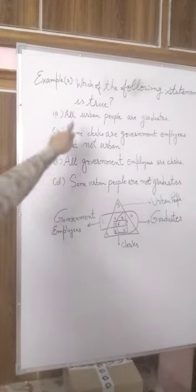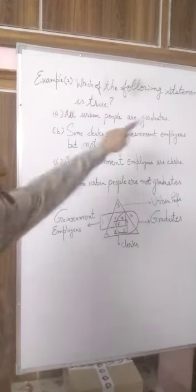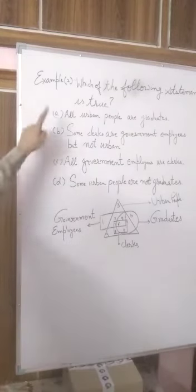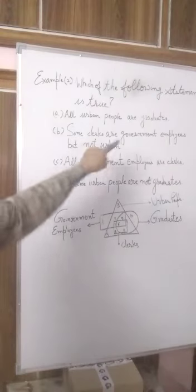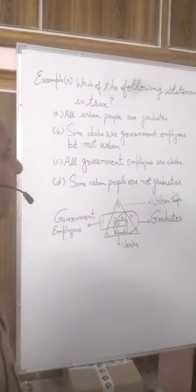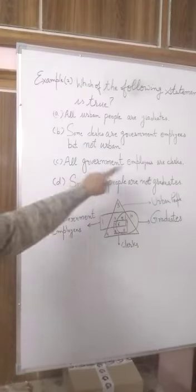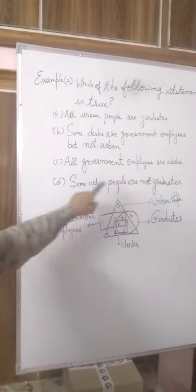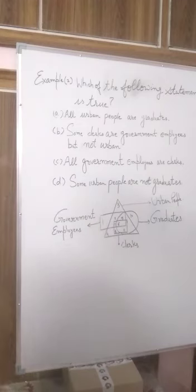The four options for the second question are: A — some urban people are graduates; B — some clerks are government employees but not urban; C — all government employees are clerks; D — some urban people are not graduates.